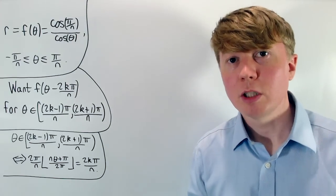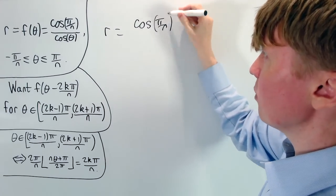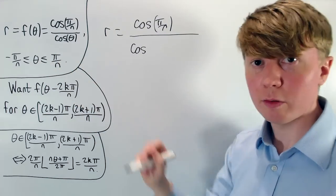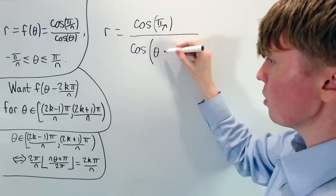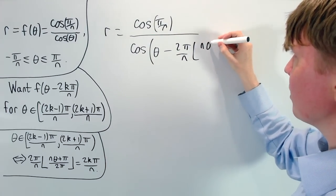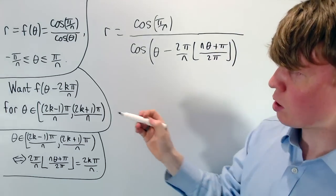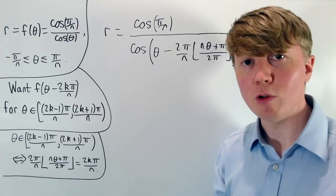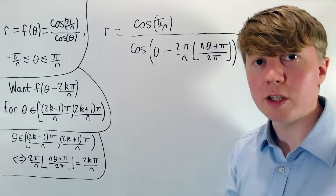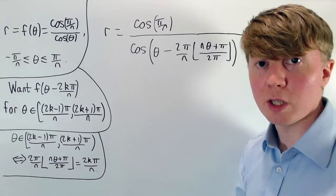All that remains is to subtract this from θ. We have r = cos(π/n)/cos(θ) as our f(θ), so instead of dividing by cos(θ) alone, we divide by cos(θ − (2π/n) × floor((nθ + π)/(2π))). This gives us the complete polar equation for a regular n-sided polygon. The function is 2π-periodic, and works for θ between 0 and 2π or between −π and π.